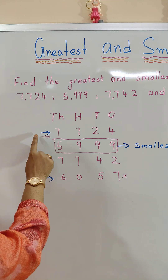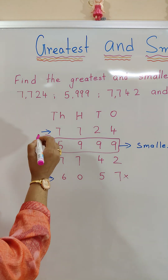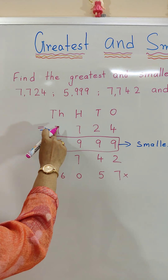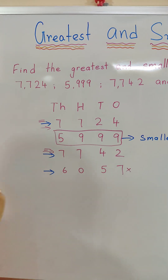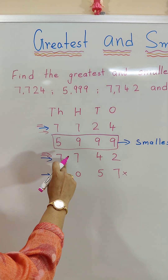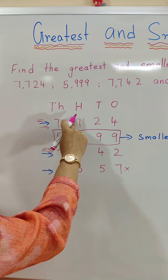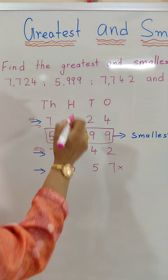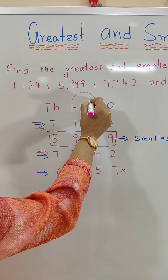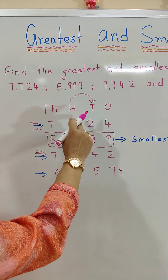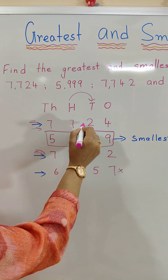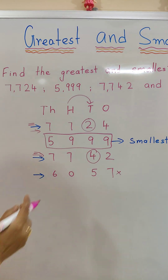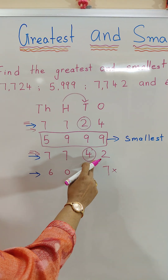Now the remaining numbers are 7724 and 7742. We are finding the greatest number. In both numbers, the thousands place is 7 and the hundreds place is also 7, so we cannot compare there. We move to the tens place, where we see 2 and 4. Since 4 is greater, we can determine the greatest number.